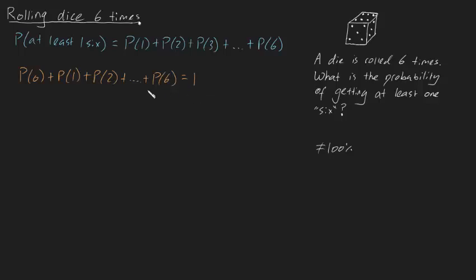And if you think about it, this makes sense, because the probability of getting exactly zero, or exactly one, or exactly two, or exactly dot dot dot, or exactly six sixes maps every single possible outcome. So of course, this has to be equal to 100%.